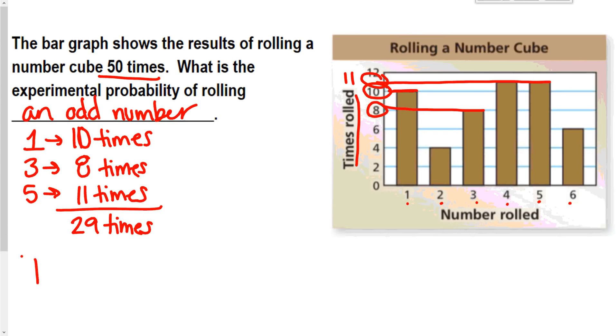So the probability of rolling an odd, well, how many times did I actually roll that odd? 29 over the number of times that I just rolled the cube in general was 50.